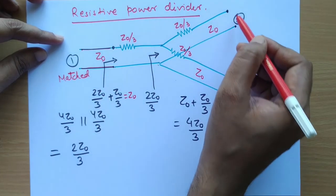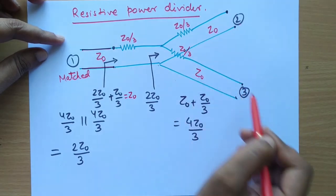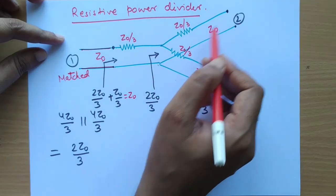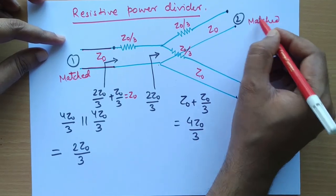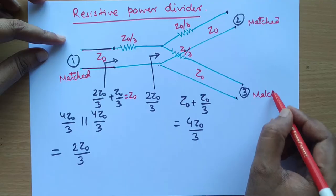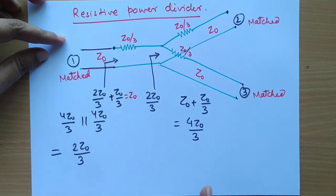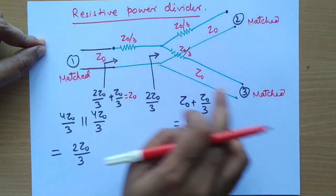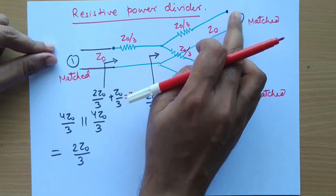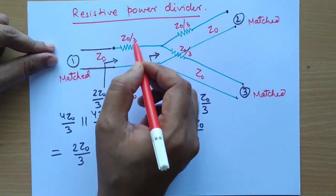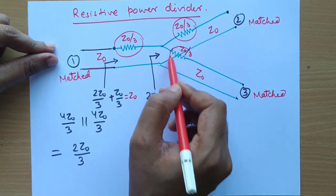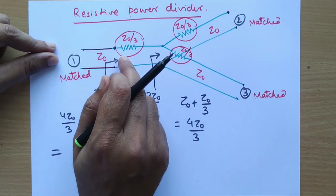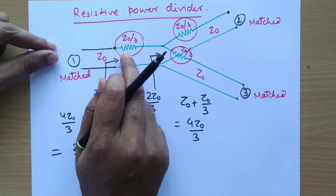Ports 2 and 3 are symmetric to port 1, so they are matched as well. We have designed a resistive power divider where all ports are matched — but this comes at the cost of induced loss in all three lines due to the Z0/3 resistors.